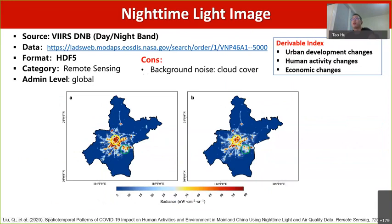There is another example of remote sensing images: the nighttime light image. The brightness of the image can be used as a proxy of urban dynamics. For example, these two nighttime light images show before and after during the pandemic. You can see the obvious change in pixels. Based on nighttime light images, we can study urban development changes, urban activity changes, and economic changes.